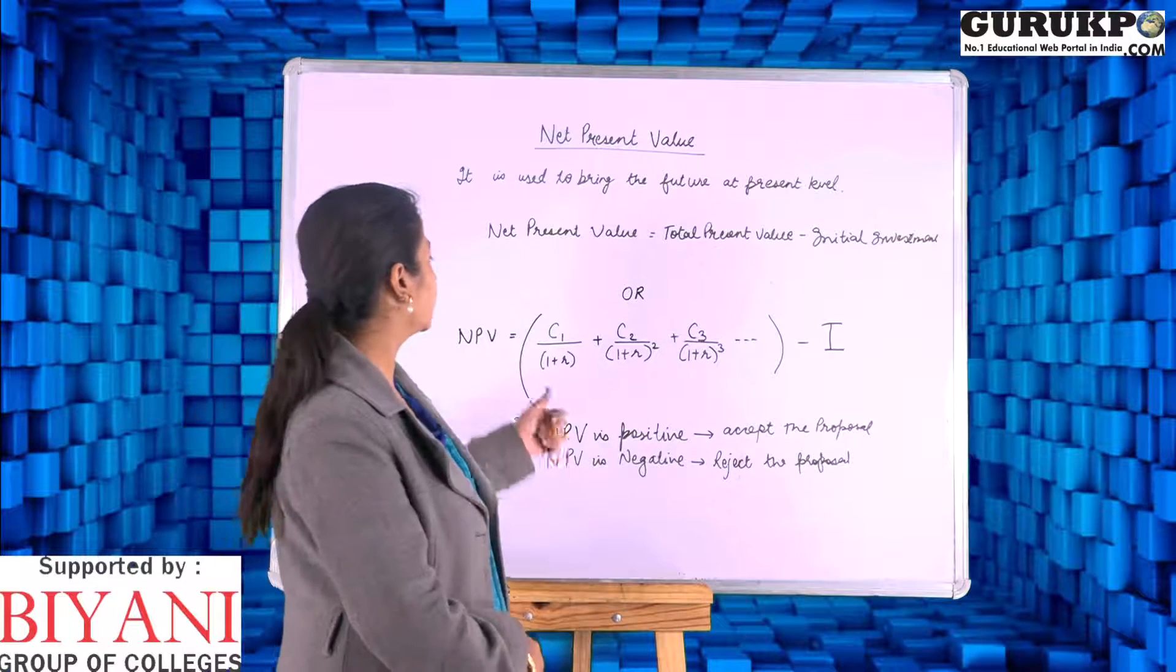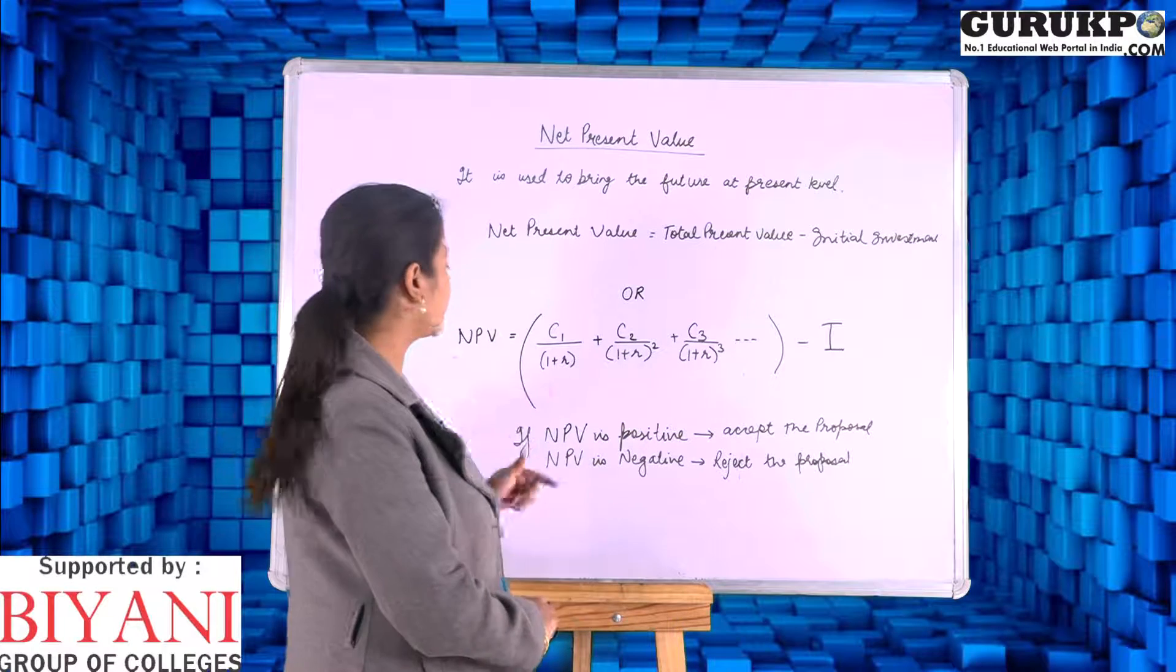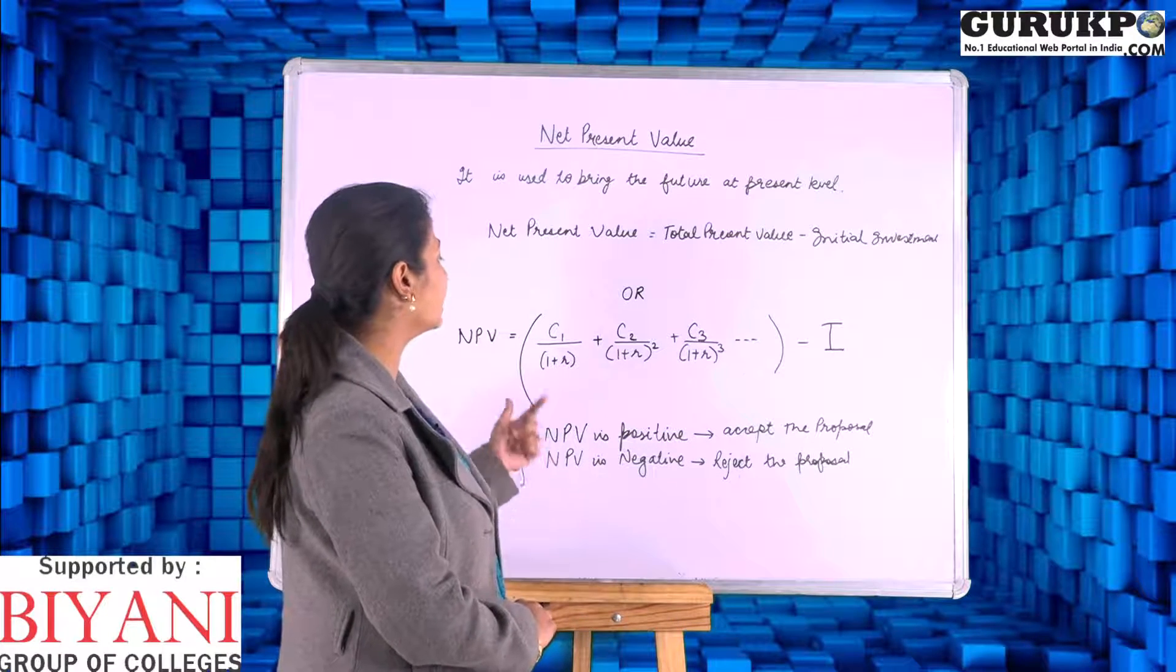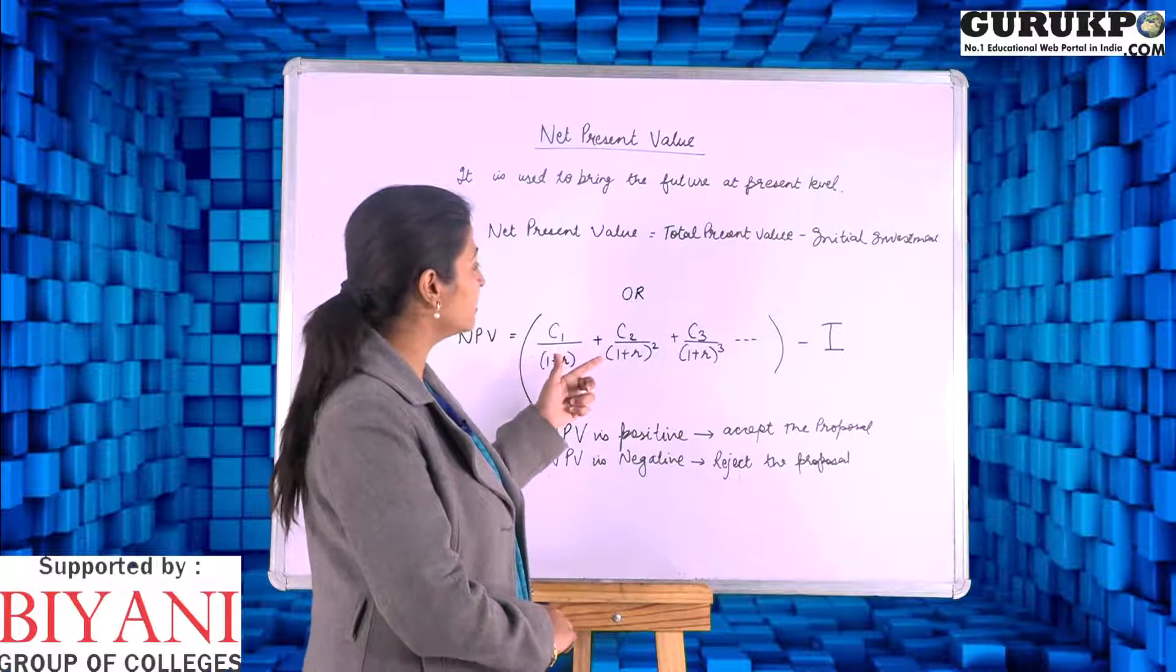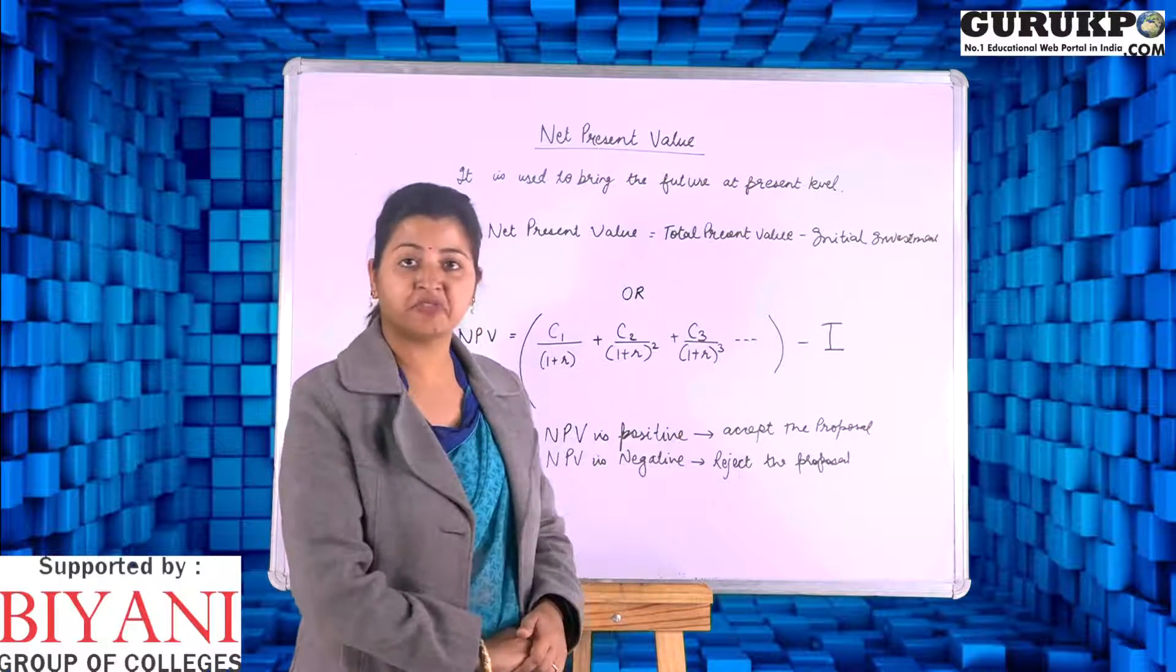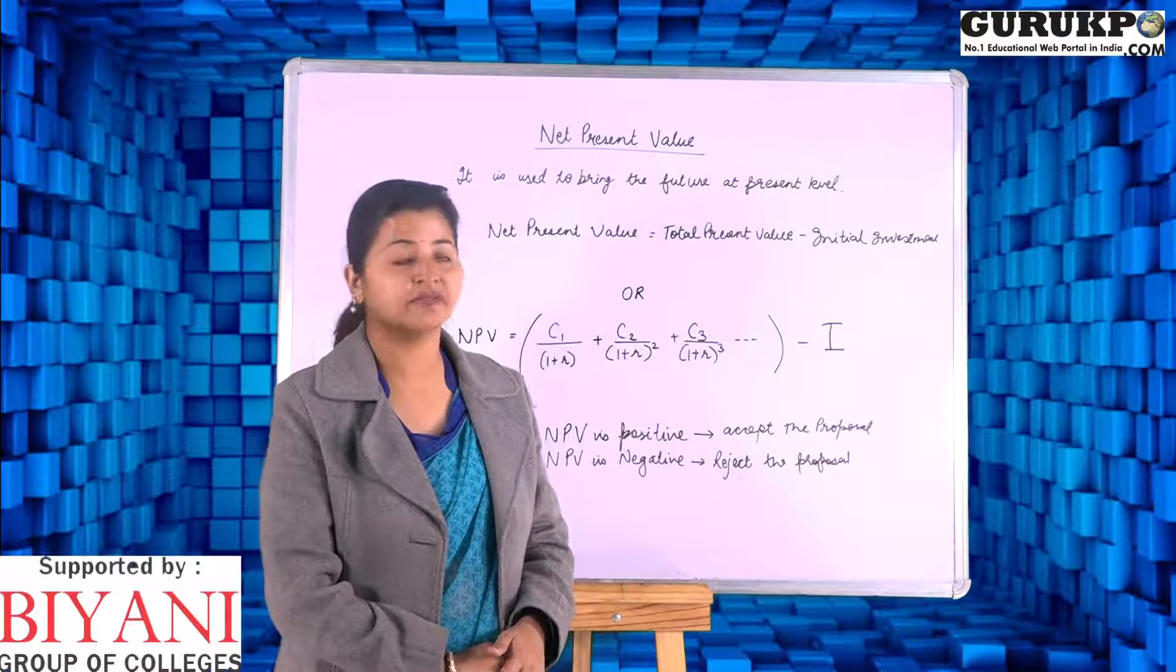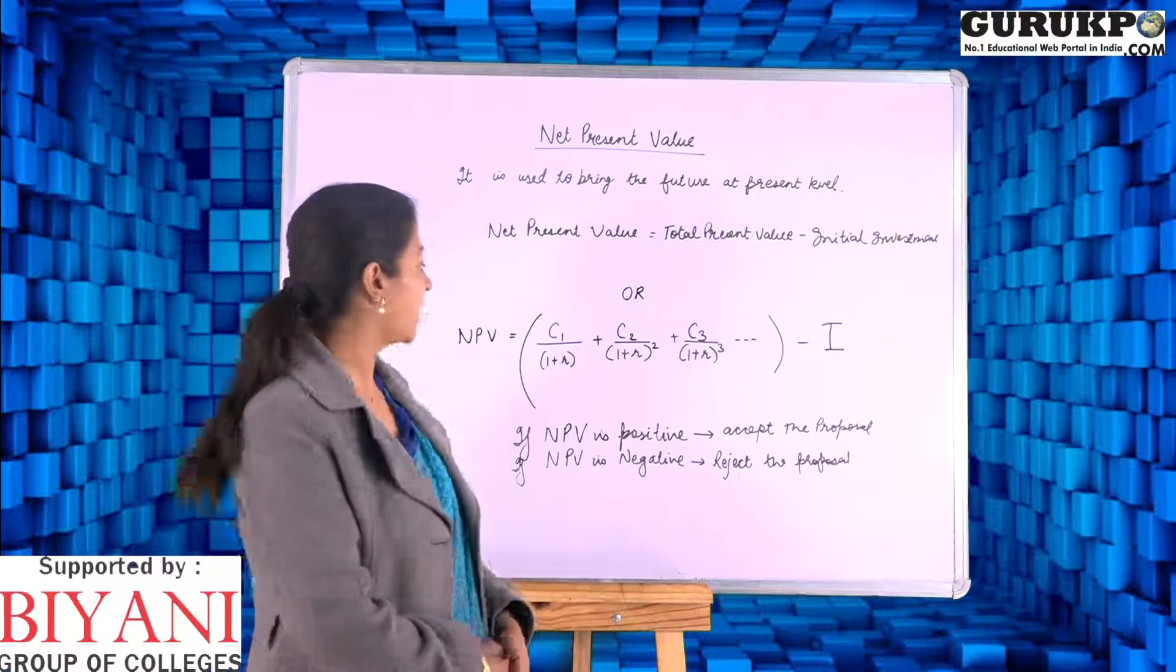Or we can say: C1 (cash flow for the first year) divided by (1 plus r, where r is the interest rate), plus cash flow of the second year, plus cash flow of the third year, and so on. Then we subtract initial investment from that cash inflow, and we get the Net Present Value.